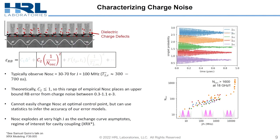Charge noise is of course present in our devices. Even with our optimization of the symmetric axis to maximize our exchange oscillation quality factor, we still end up with Q between 30 and 70 for 100 MHz J. This corresponds to a T2* of about 500 nanoseconds. As you can see in the upper right plot here, this is characteristic of a single two-qubit device and is fairly uniform across the array. Theoretically, the coefficient for this term is bounded above by 1, and this allows us to use N_osc to put an upper bound on our RB error — for our typical devices, putting us around 0.3 to 1.1 E-3.